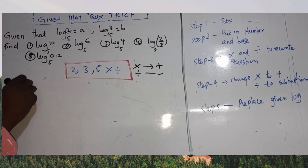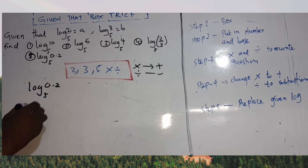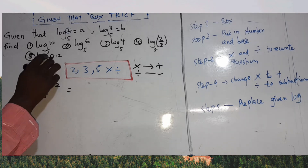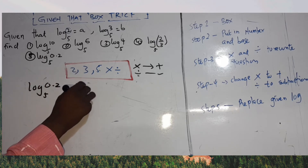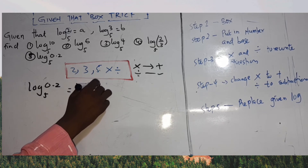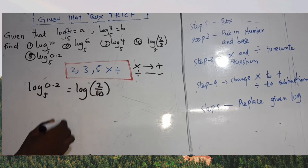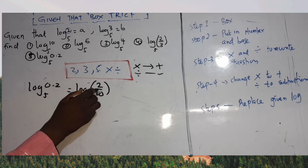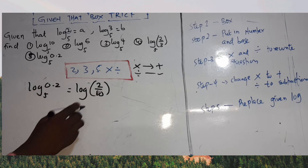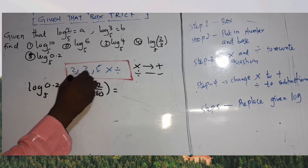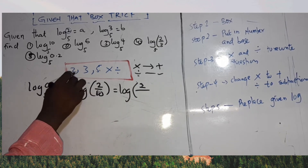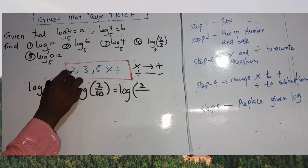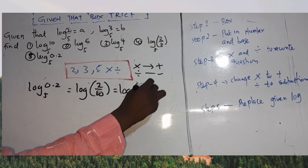Fifth example: log base 5 of 0.2. First, if you are given a decimal, change it to a fraction. Log base 5 of 0.2 is the same as log base 5 of (2/10). Now 2 is in the box, but 10 is not. So I must change 10 using numbers from the box: 2 times 5 equals 10, so I rewrite as log base 5 of 2 over (2 × 5).